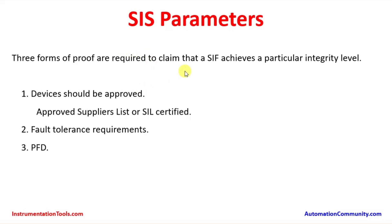Three forms of proof are required to claim that a SIF achieves a particular integrity level. First, devices should be approved — from an approved suppliers list or SIL-certified. Instruments and valves used in the safety instrumented system must come from approved suppliers and manufacturers, certified by agencies such as EXIDA or TÜV, which certify sensors, logic solvers, and final control elements against standards such as IEC. Second, fault tolerance requirements must be met. Third, the probability of failure on demand must be achieved.